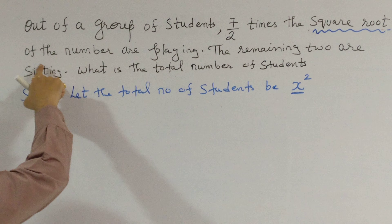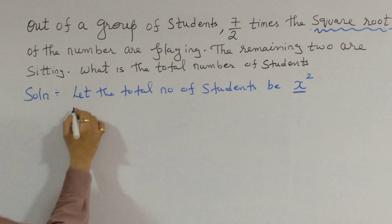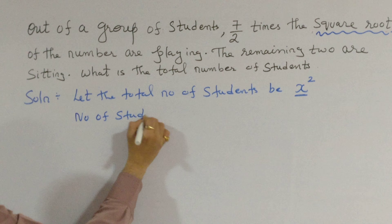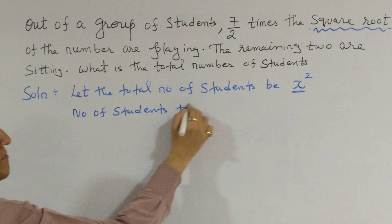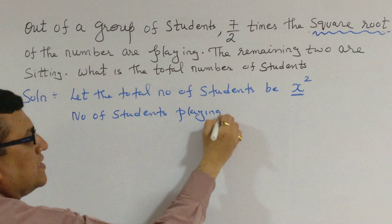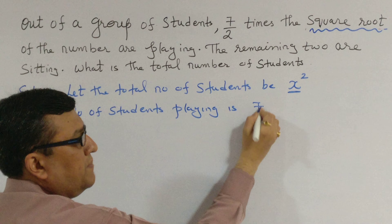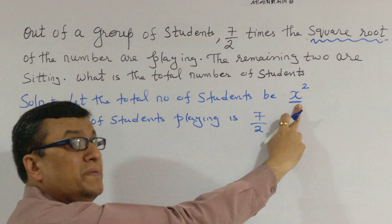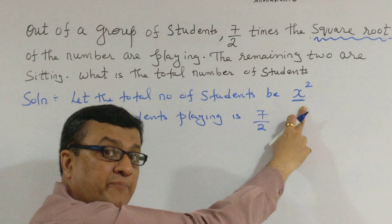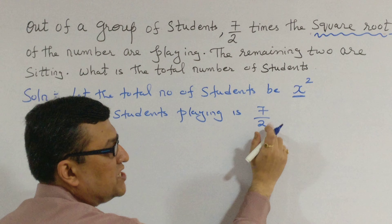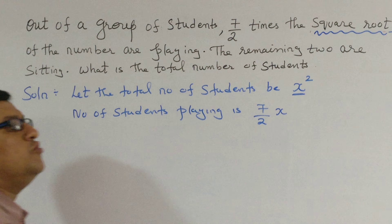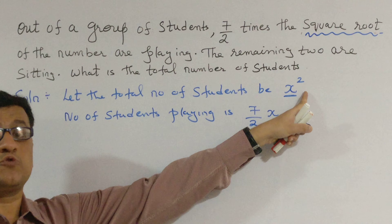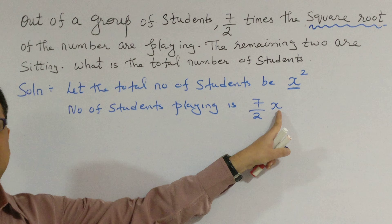The next condition: seven by two times the square root of the number are playing. So the number of students playing is seven by two times the square root of the total number. The total number being x², the square root of x² is x, so we write down seven by two times x.